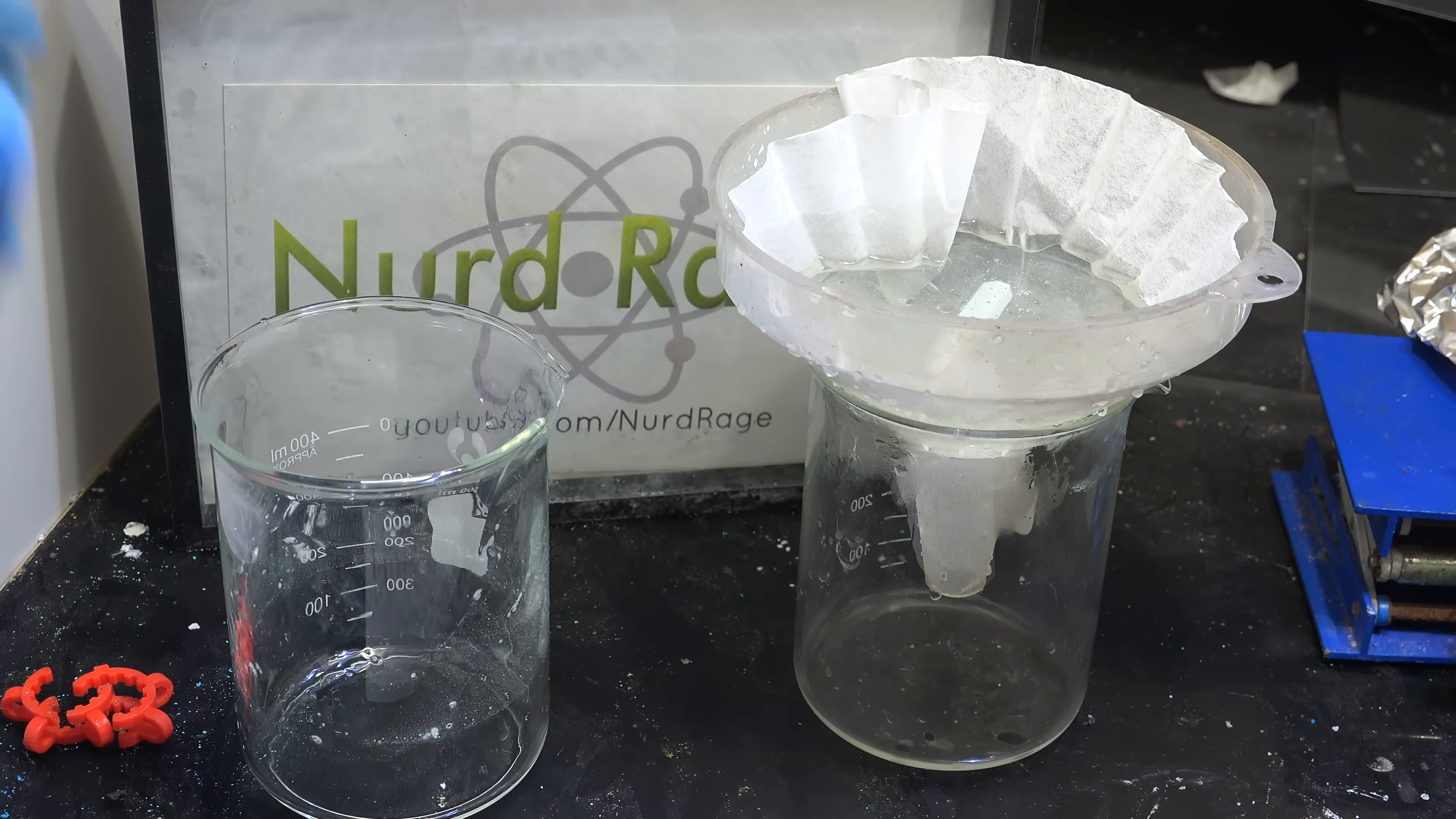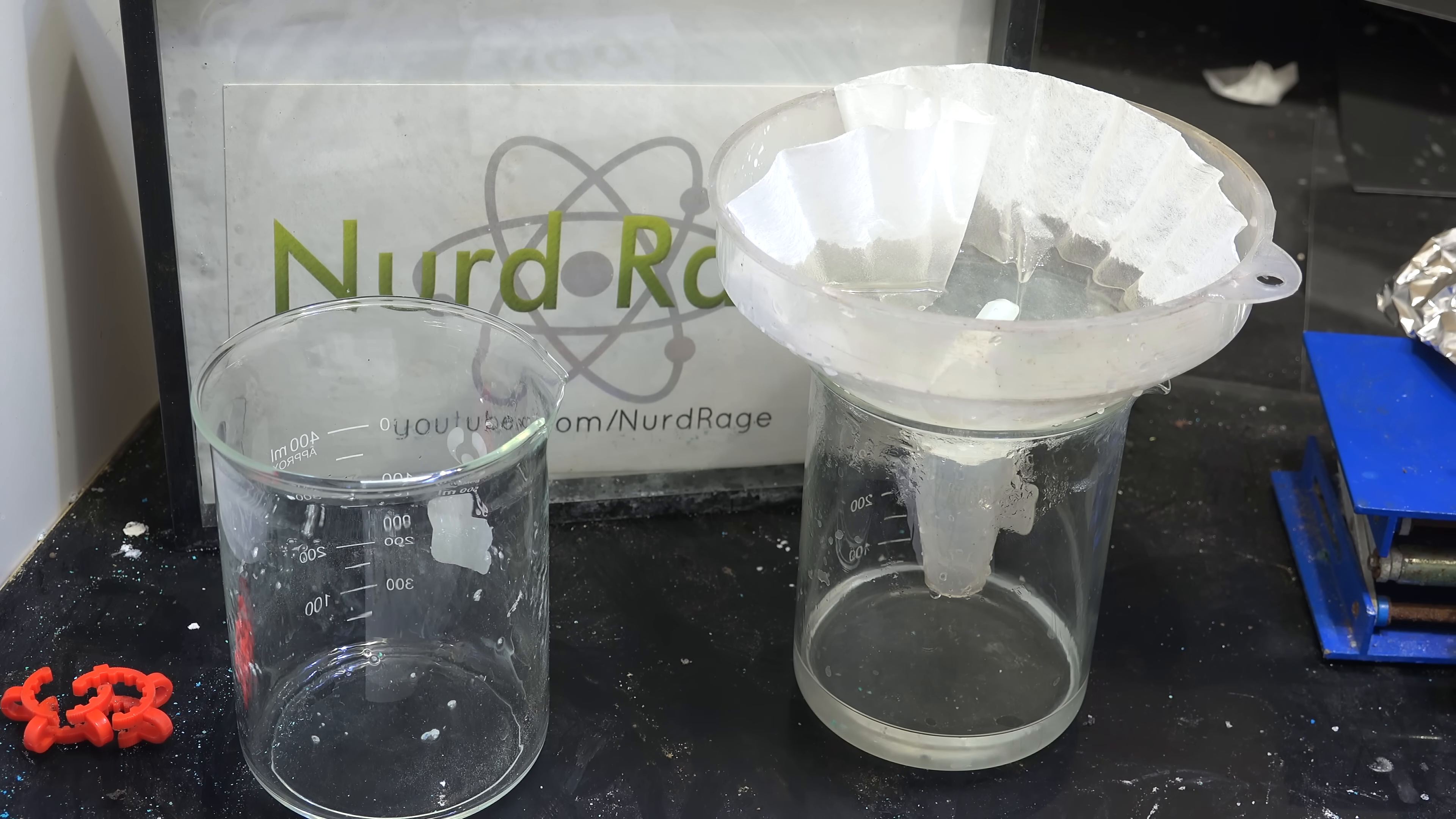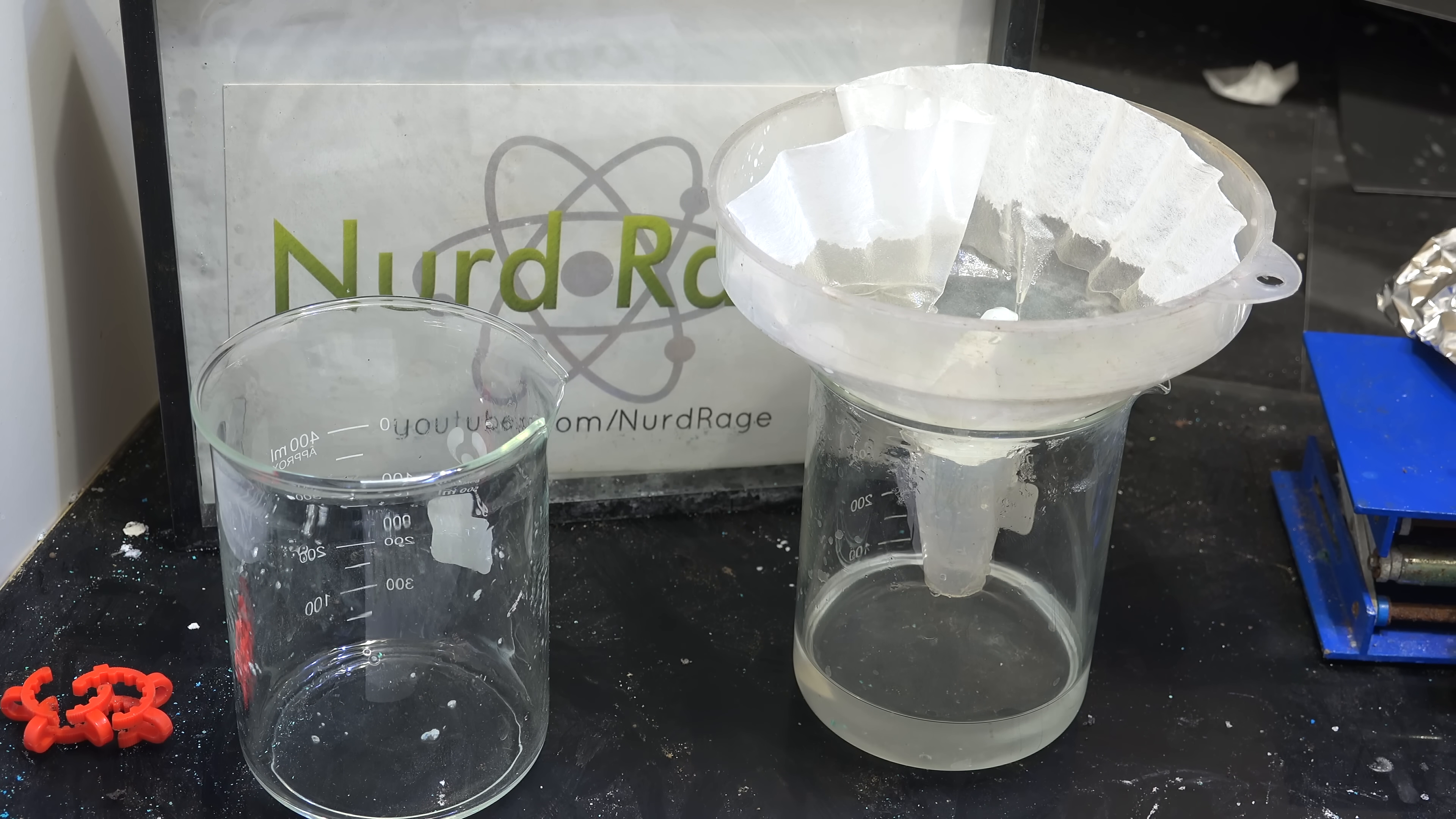If it's cold, it becomes a viscous syrupy mass that's extremely slow to filter. Now whatever you do, do not use fritted glassware to filter the sodium silicate. Sodium silicate is essentially dissolved glass and can clog your frit. Use a disposable paper-based filter.